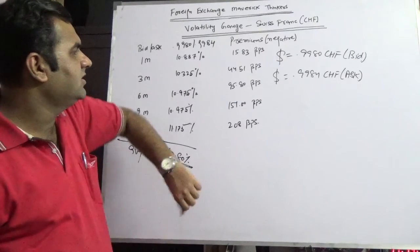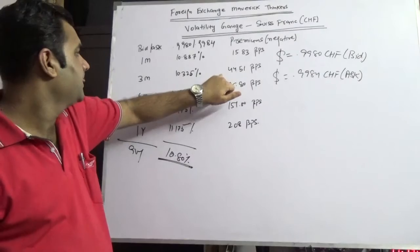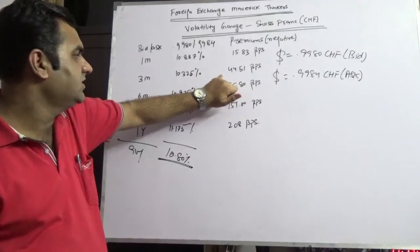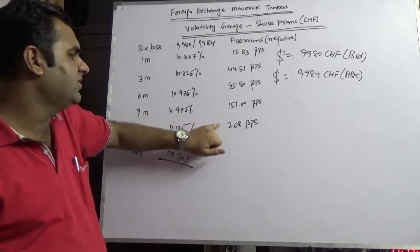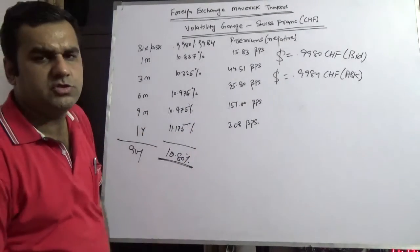For one month the premium of Swiss franc is 15 bips minus, not to mention three months 44, six months 95, nine months 151, and one year is 208 bips.